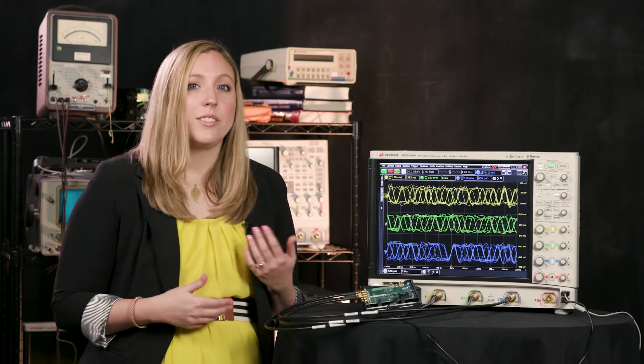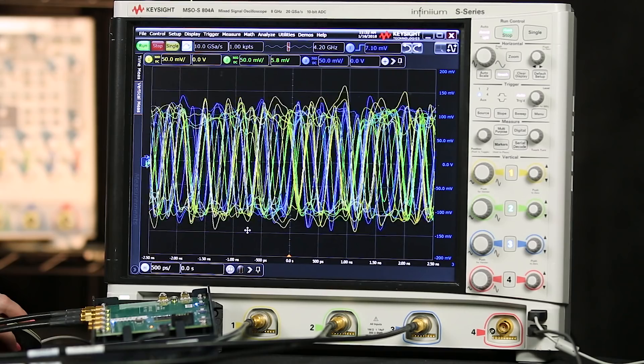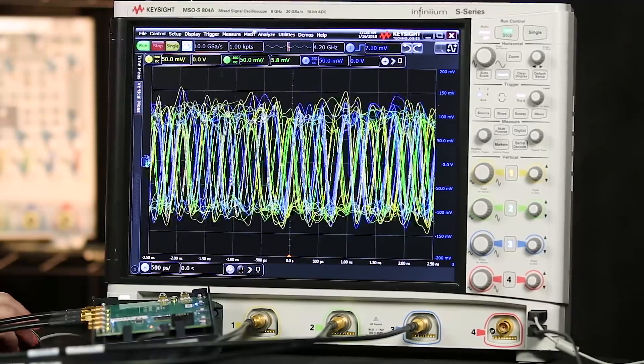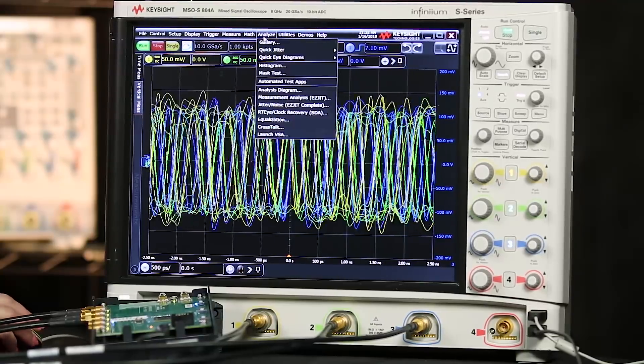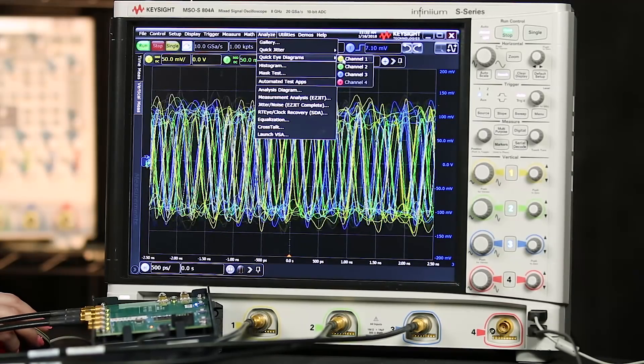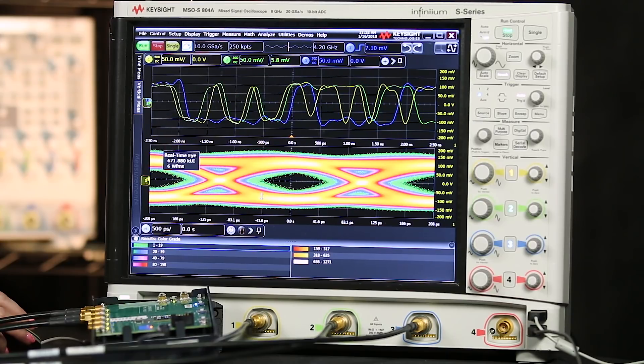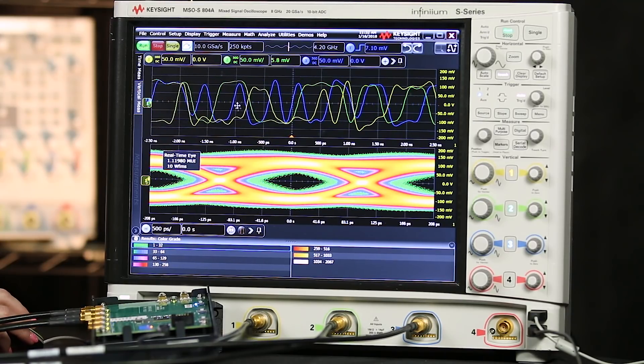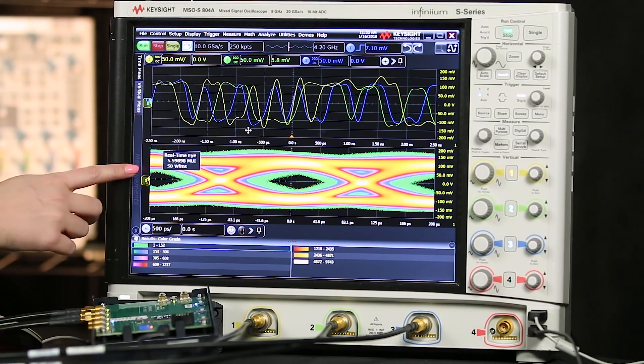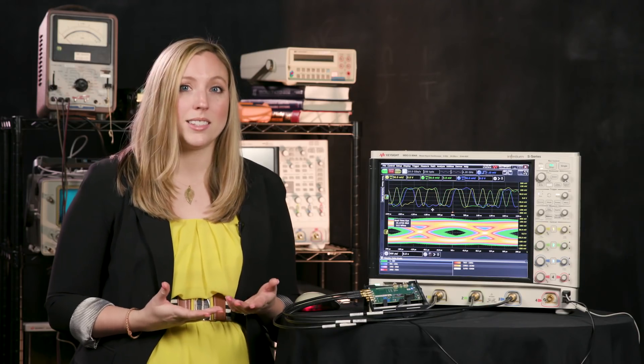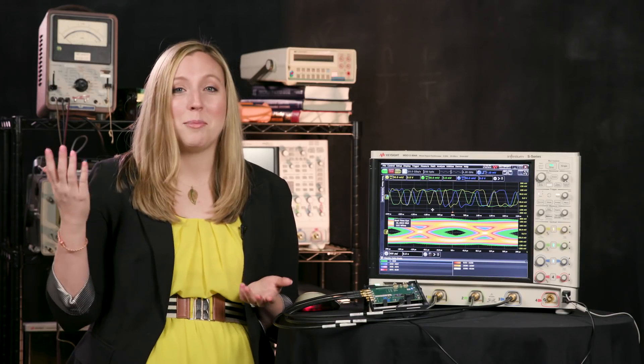First, I'll create an eye diagram to see what my margins look like and find out if there is really a problem. I've centered my waveforms on screen and vertically scaled them. So now I'll go to analyze, choose quick eye diagrams, and channel one. This shows me what the eye diagram is of the victim signal. You can see the eye opening is very small, which means I do have errors and could be sending false packets, potentially sending my drone right into my coworker instead of up into the sky.